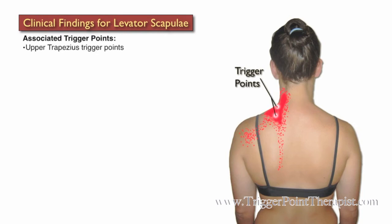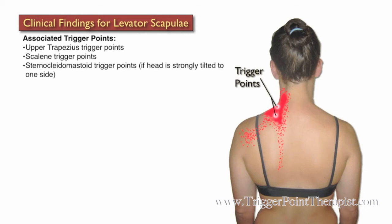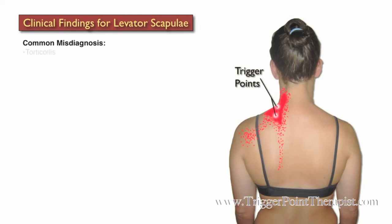Some trigger points associated with Levator Scapula include the upper trapezius, the scalenes, and if the head is strongly tilted to one side, then SCM trigger points will be involved. Clients with active trigger points in the Levator Scapula are often misdiagnosed with torticollis or simply stiff neck.